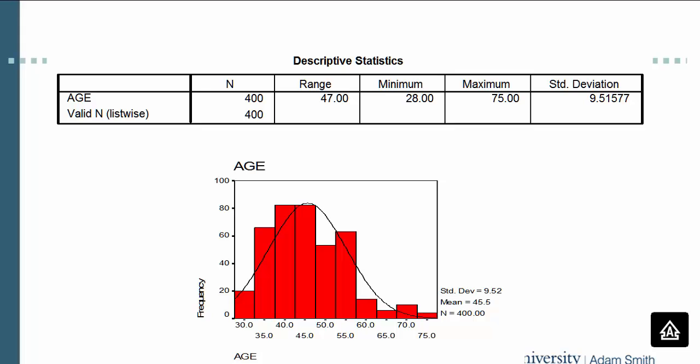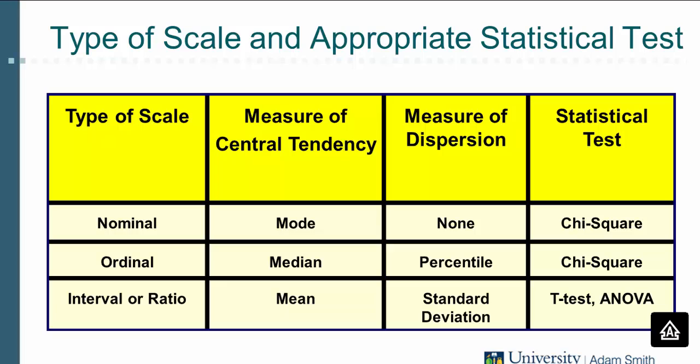You will also see here that I asked SPSS to draw a histogram of the frequencies distribution. I will finish this video with the most critical consideration concerning data analysis. There is a strict relationship between the type of data you collect, the scale you use, and the type of analysis you may carry out on this data. Almost all types of analyses can be carried out on interval and ratio data, and very few analyses can be carried out on nominal data.